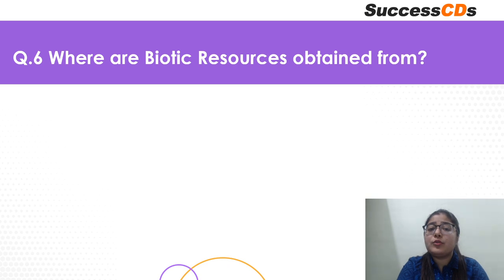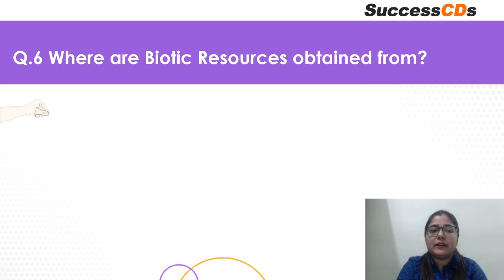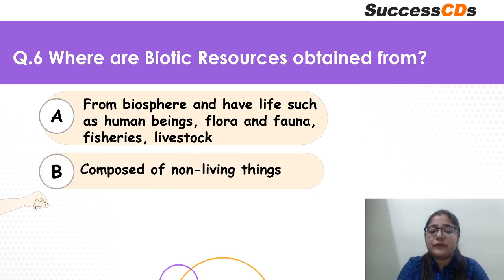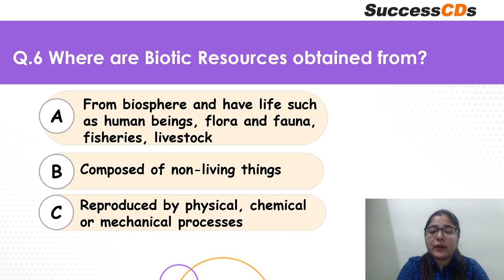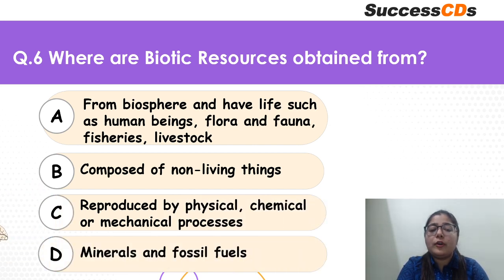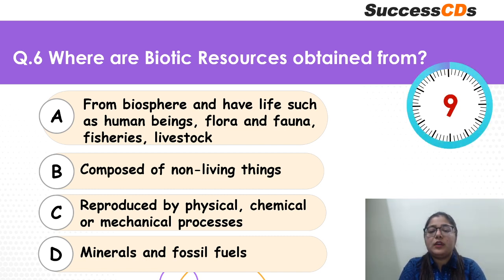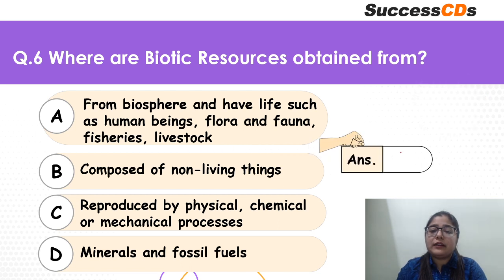Coming to question 6: where are biotic resources obtained from? From biosphere and have life — such as human beings, flora and fauna, fisheries, livestock. Composed of non-living things? Reproduced by physical, chemical or mechanical processes? Or mineral and fossil fuels? Go everyone — the correct answer is definitely going to be A. Biotic resources involve bio, which talks about life.